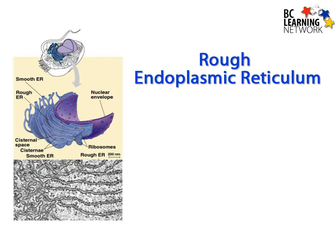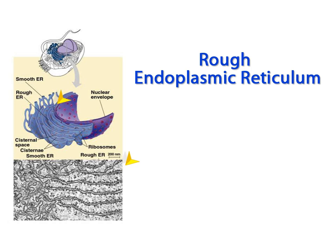The rough endoplasmic reticulum is identified in a diagram by the little black dots that appear along its membrane and represent the ribosomes.